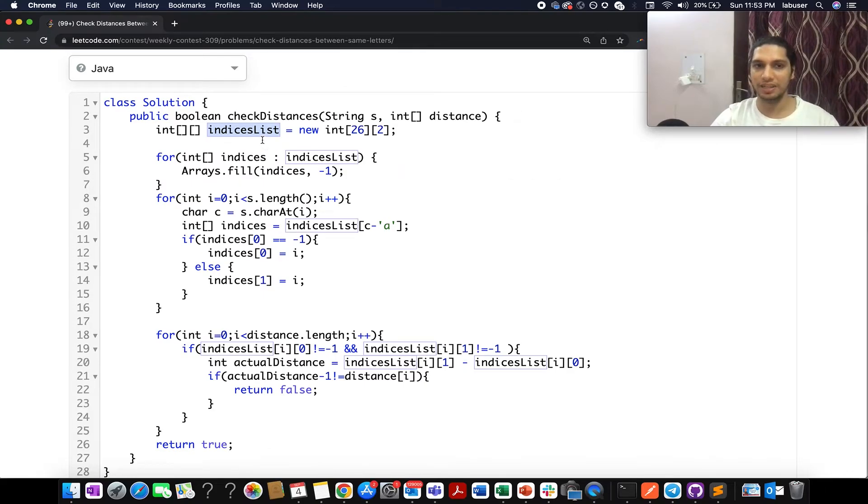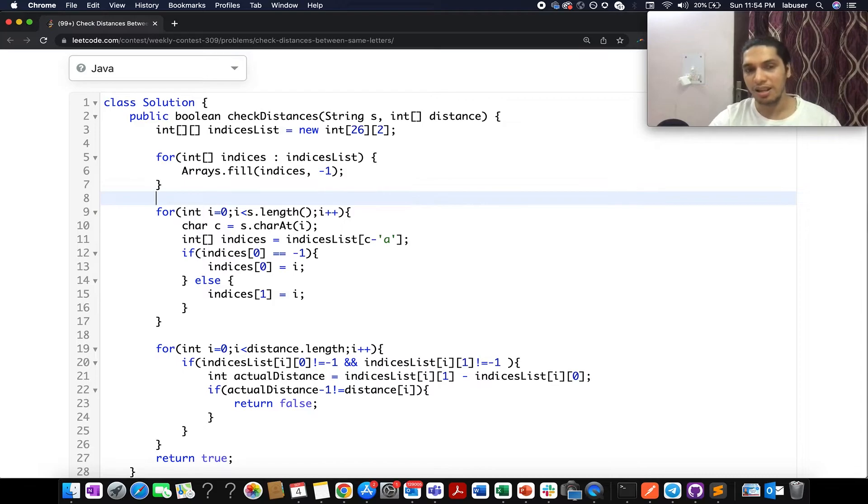Here in the first go, I have created a map and the map at max will have 26 elements in it as keys. And each entry would have two parts in it. The first part would be the first index at which that character occurs. And the second part would be the second index at which that character occurs. And by default, I have filled in the entire 2D matrix with minus one to start with so that I am aware of whether that number was part of the input string or not.